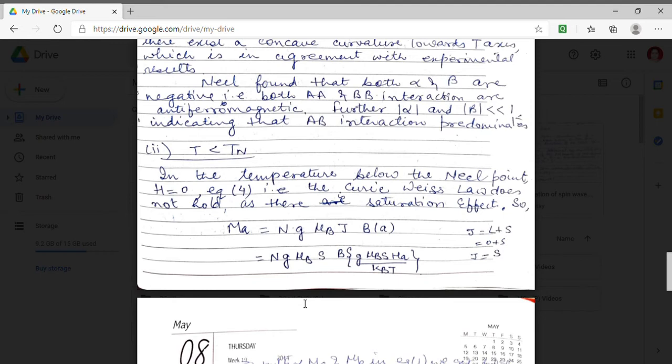The second temperature range which is taken is T less than TN. Now in this temperature range that means below the Neel temperature there will be no external field. And the Curie Wiese law also does not hold. Because in this temperature range the material will remain magnetic in absence of any external applied field. That means there will be saturation effects.